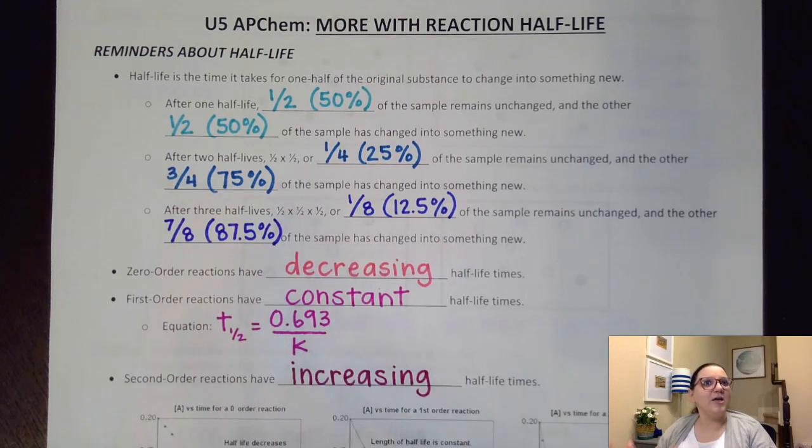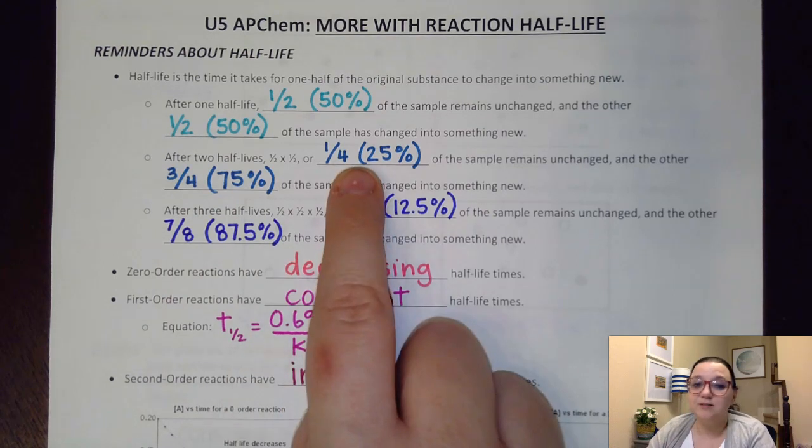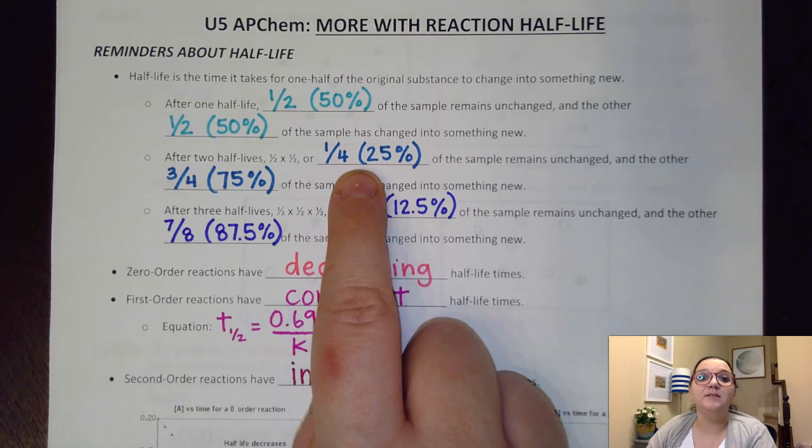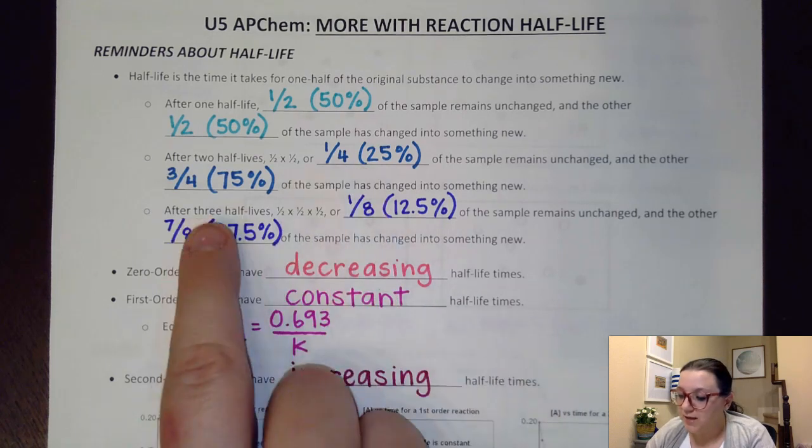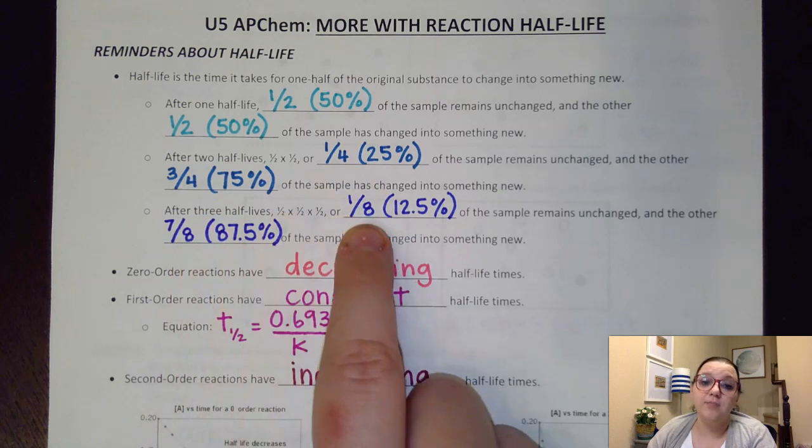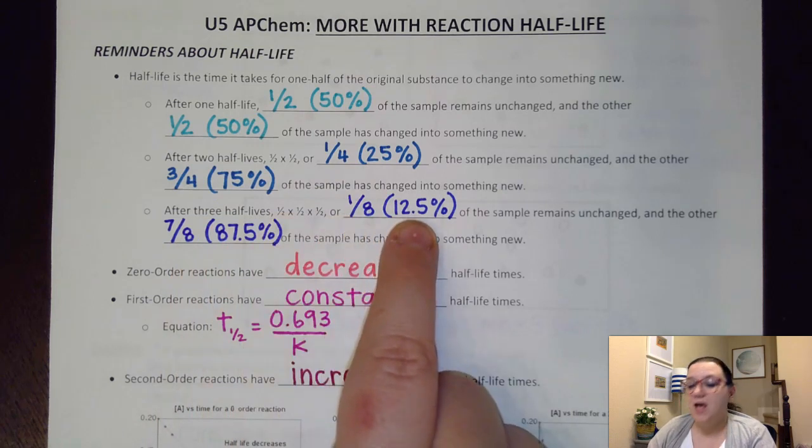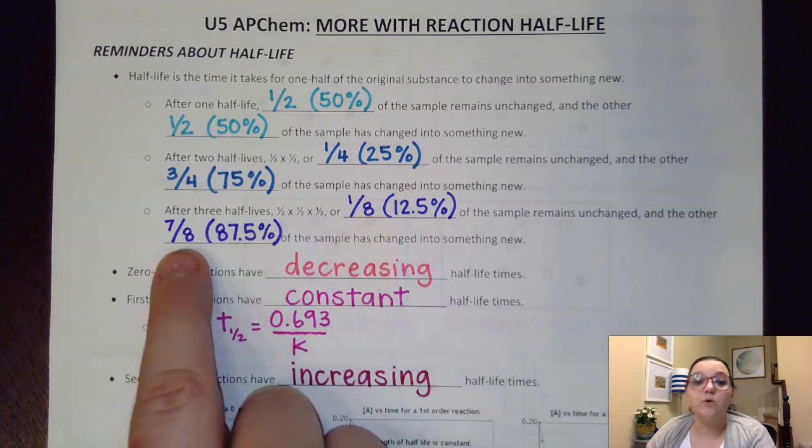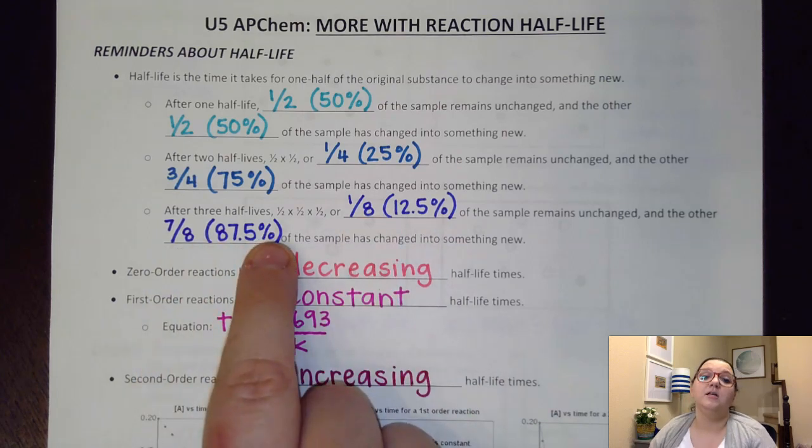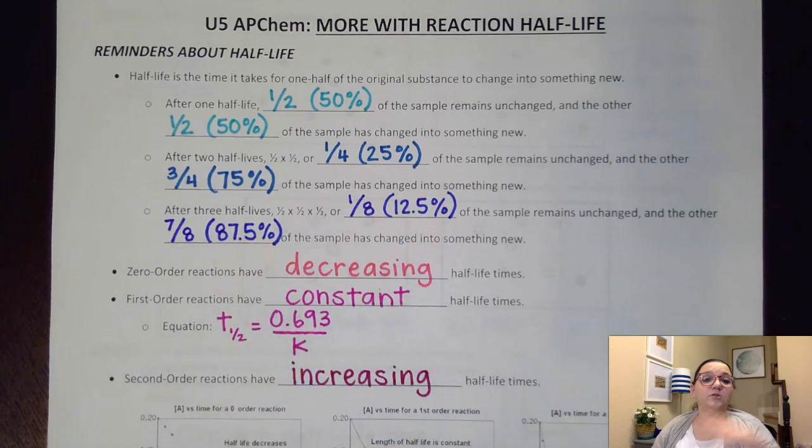Well, again, let's say I go through yet another half-life. So now this reactant that's already been cut quite a bit is going to get cut in half again. So after three half-lives, only one-eighth or 12.5% remains unchanged, and the other seven-eighths or 87.5% changed into something new. So you can see that could go on and on and on for however many half-lives you have.